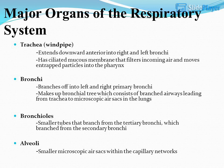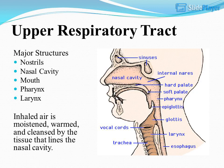Major organs of the respiratory system. Trachea, or windpipe, extends downward anteriorly into right and left bronchi and has a ciliated mucous membrane that filters incoming air and moves entrapped particles into the pharynx. Bronchi branch off into left and right primary bronchi, making up the bronchial tree, which consists of branched airways leading from the trachea to microscopic air sacs in the lungs. Bronchioles are smaller tubes that branch from the tertiary bronchi, which branched from the secondary bronchi. Alveoli are smaller microscopic air sacs within the capillary networks.